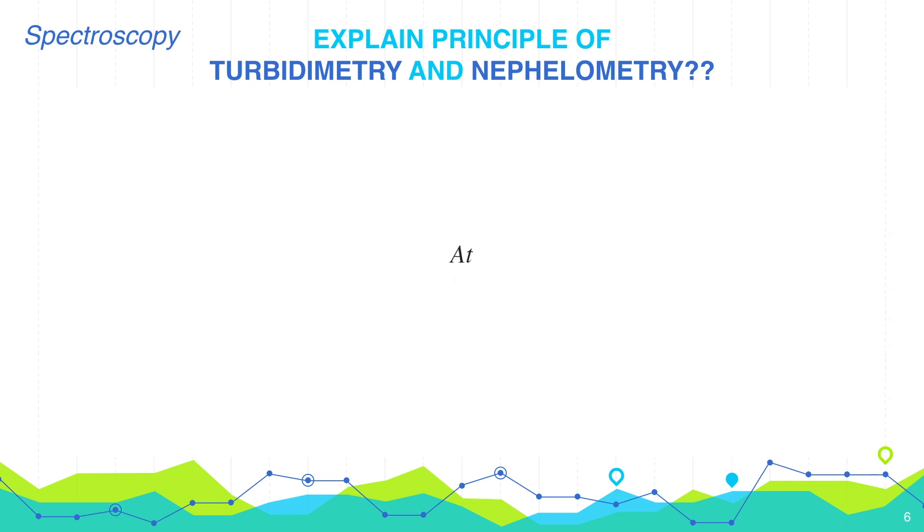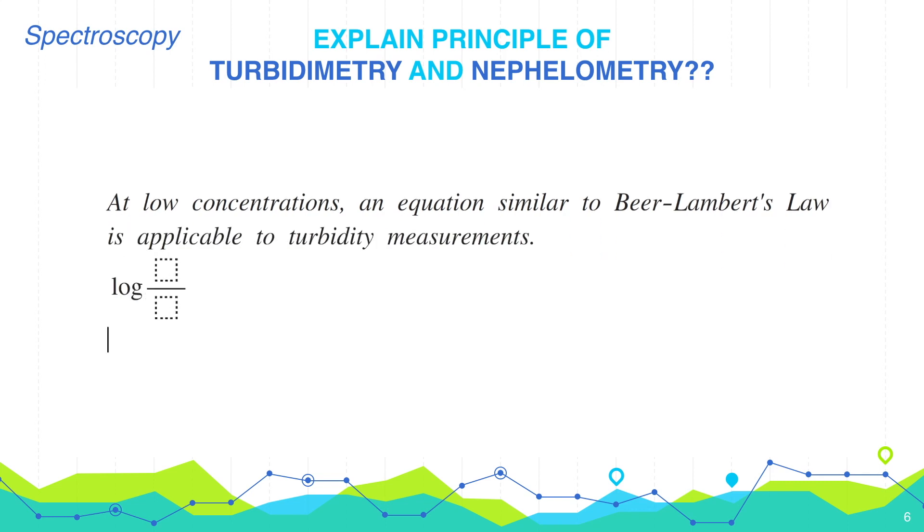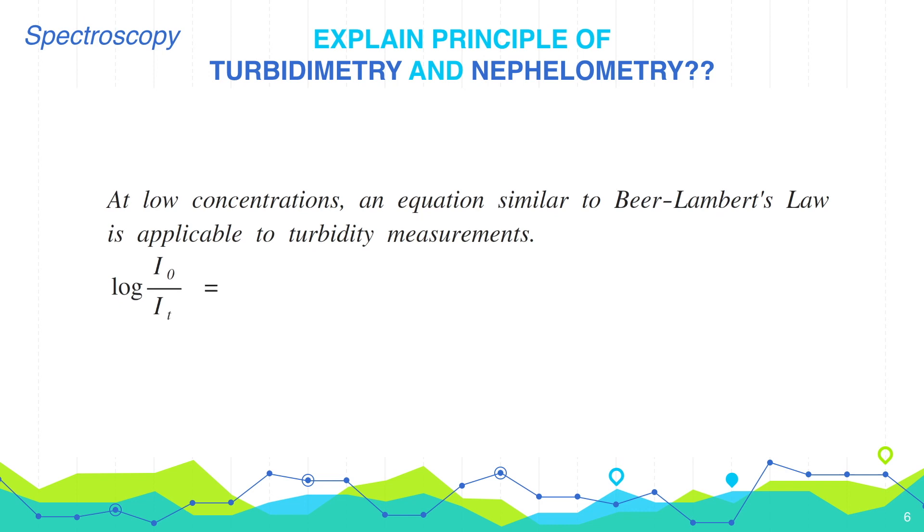At low concentrations, an equation similar to Beer-Lambert's law is applicable to turbidity measurement. Log of i0 by it is equals to k c l.